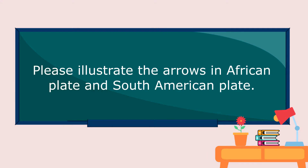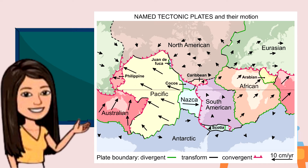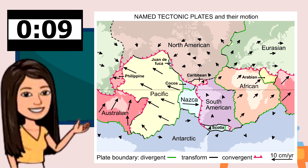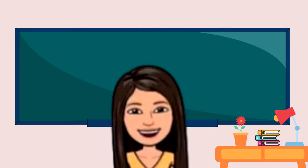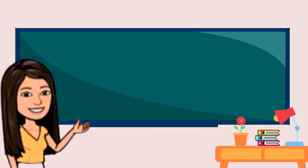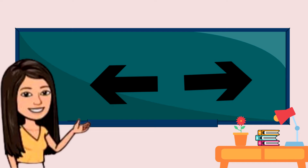Please illustrate the arrows in the African plate and the South American plate. I will give you time to draw. The arrows are like this — they show that the two plates are moving away from each other.